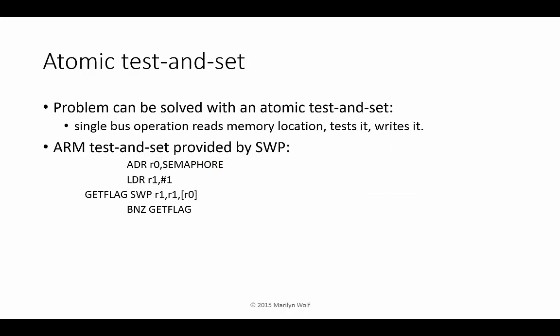The problem is that CPU1 had to independently test the flag and then perform its write, and CPU2 had to do the same thing. The way to solve this problem is with an atomic test-and-set operation — a single operation that reads a memory location, tests it, and then writes the location back, allowing changes only when the flag is available.